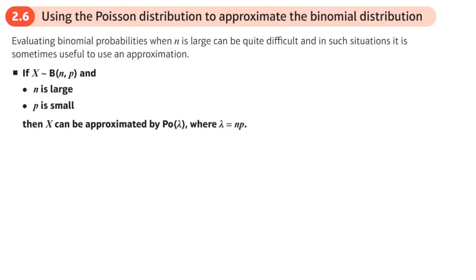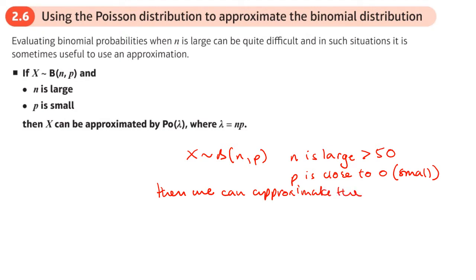If we have a case where I've got a binomial distribution with n and p, and let's say that n is large—what I mean by that is it's greater than 50, that's what we consider large with binomial—and p is close to zero, so we call it small, then we can approximate the binomial distribution with a Poisson distribution.